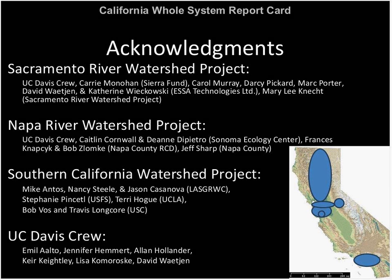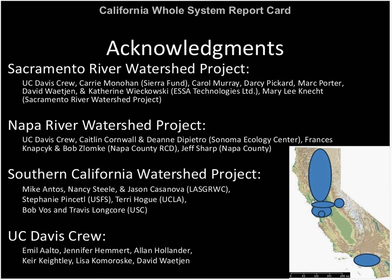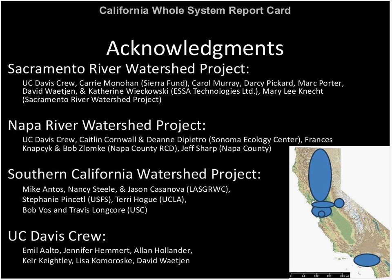I want to acknowledge a lot of people associated with the three projects that I'm going to use as the basis for this discussion. The Sacramento River Water Project had a grant to understand how to use a report card in the Sac River Basin. The Napa River Watershed Project was focusing on the North Bay. Southern California was led by the LA San Gabriel River Watershed Council. A crew of graduate students and technical programmers listed at the bottom were all helpful in developing these ideas and conducting these projects.